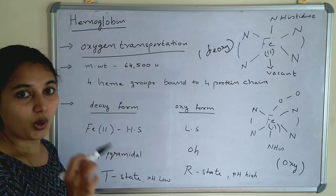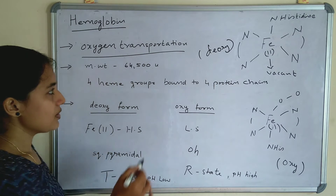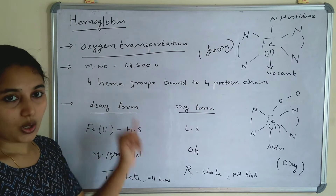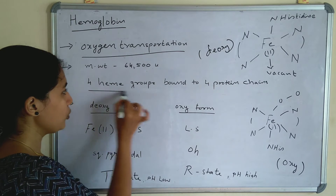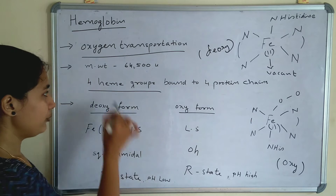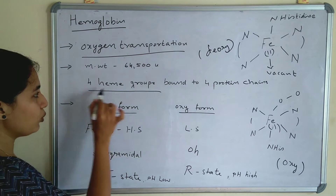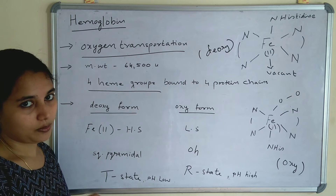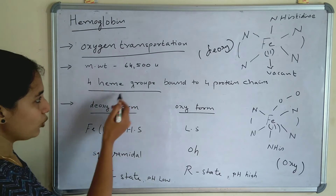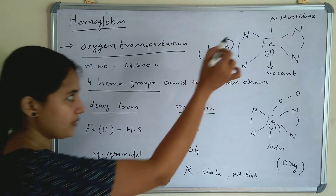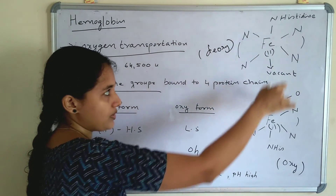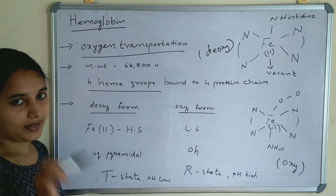The function of hemoglobin is oxygen transportation. The molecular weight is 64,500 atomic mass units. Four heme groups are bound to four protein chains in hemoglobin. In myoglobin, only one heme group is present, which we will see in the myoglobin section. Four heme groups are present in hemoglobin, and the central metal atom is iron in the +2 oxidation state. Four pyrrole rings are present, and the 5th position is connected to the nitrogen of histidine.